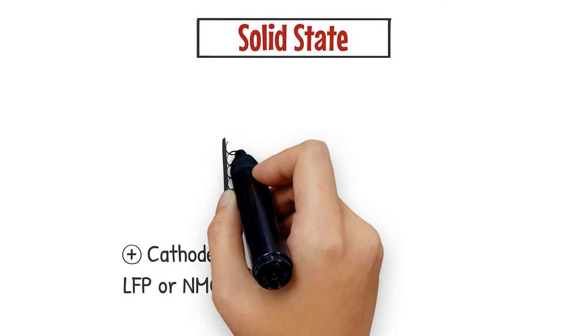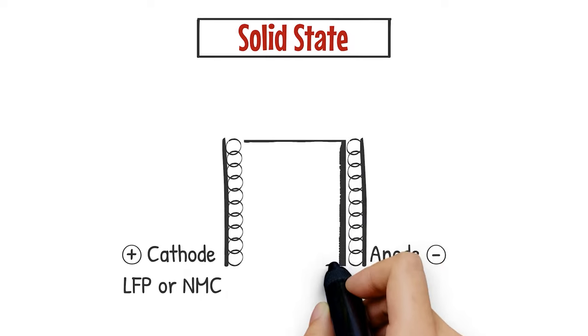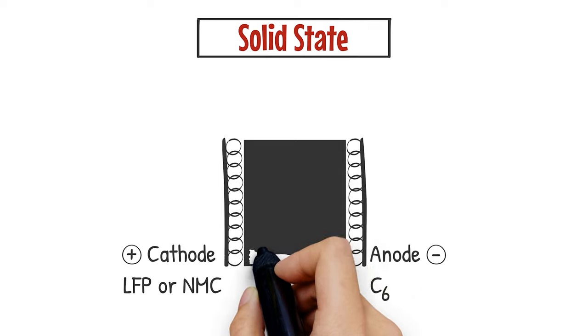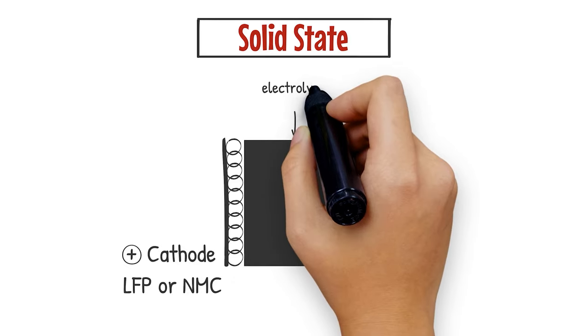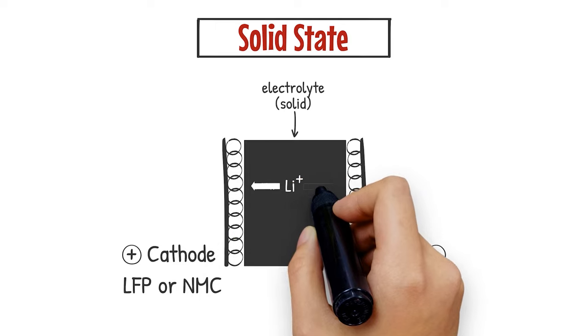There is the cathode, either LFP or NMC, and then the anode, which is graphite. We don't actually need a liquid and separator here at all, as the electrolyte itself, which is solid, allows transport of lithium ions back and forth between the anode and cathode and also acts as the separator.